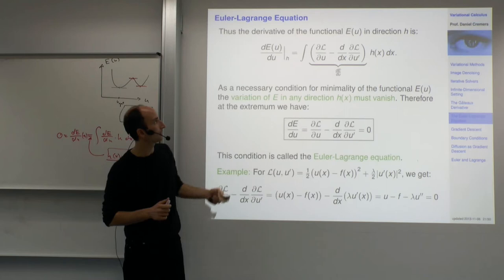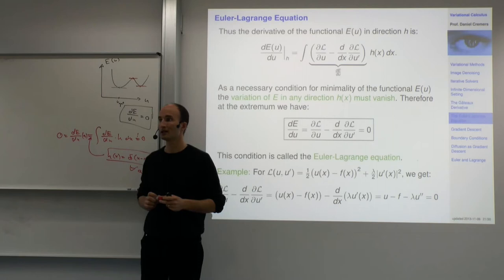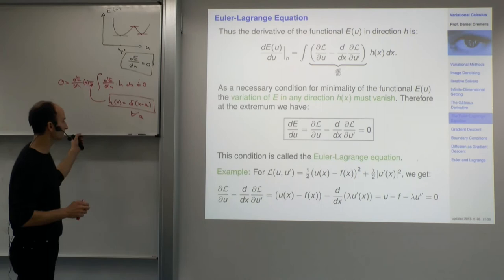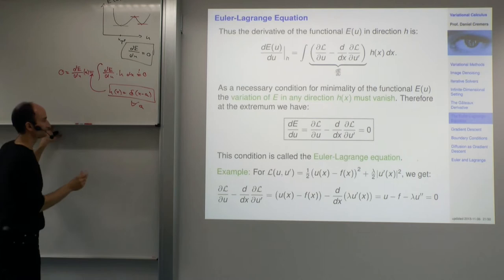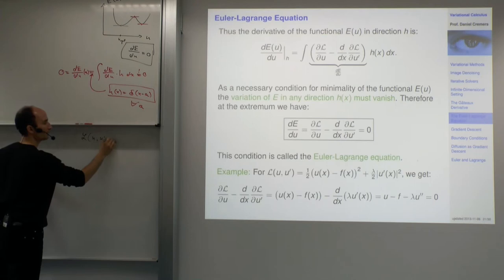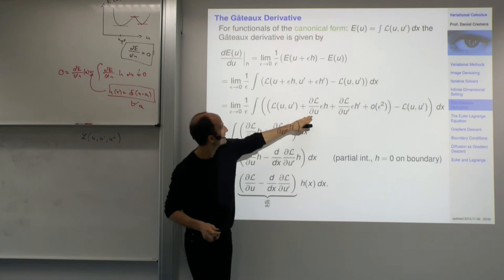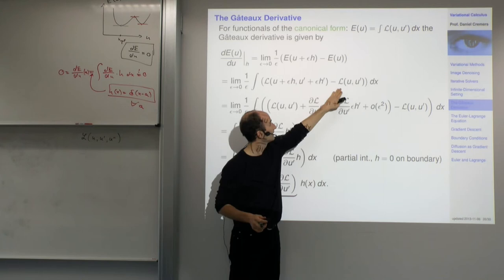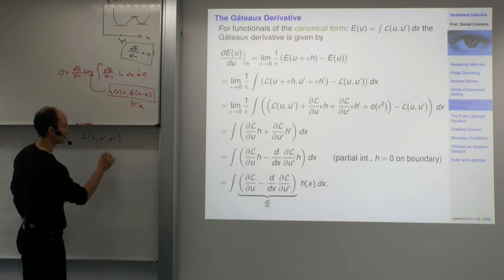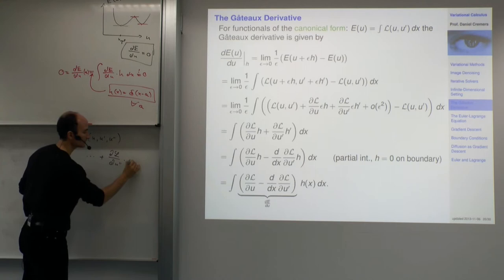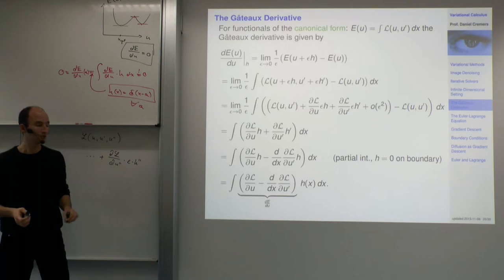If you have higher-order derivatives in your L, you also get an Euler-Lagrange equation but it won't look exactly the same. If L depends on u, u prime, and u double prime, you do the same Taylor expansion. You get one term from u, one from u prime, and another from u double prime: dL by du double prime times epsilon h double prime.